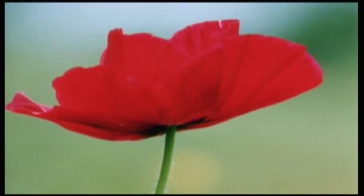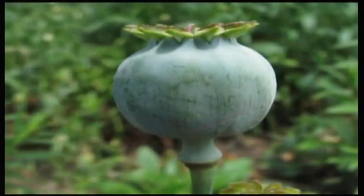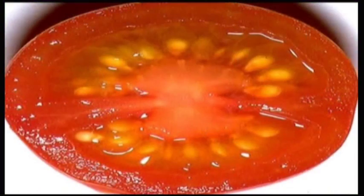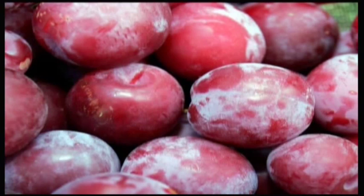The seed hardens and dries. This enables it to survive in adverse conditions. The ovary wall may harden and become a pod. Example poppy. Or it may become fleshy and succulent. Example tomatoes, plums.